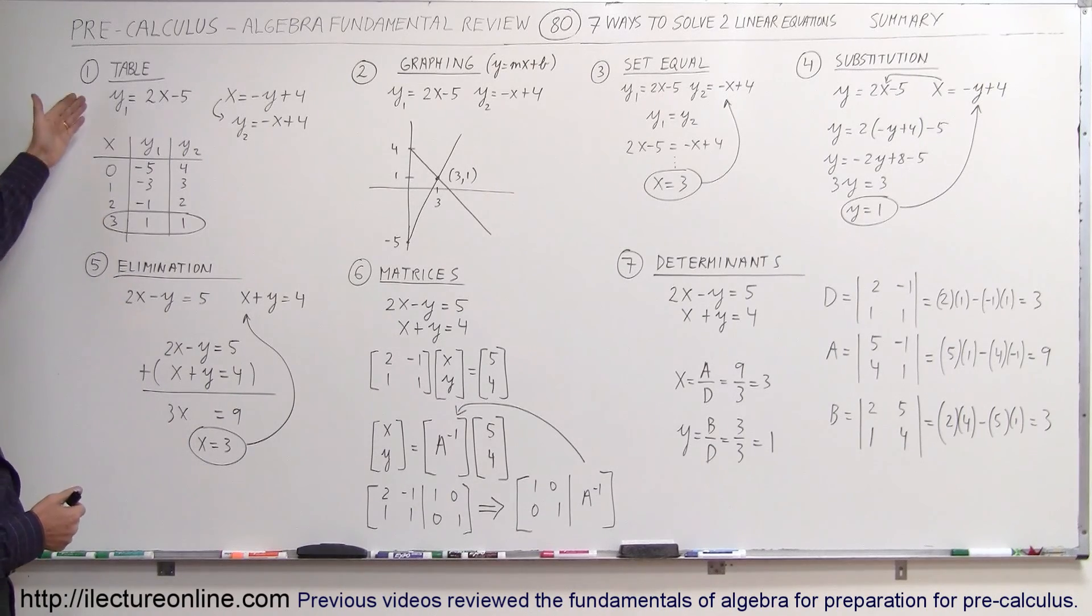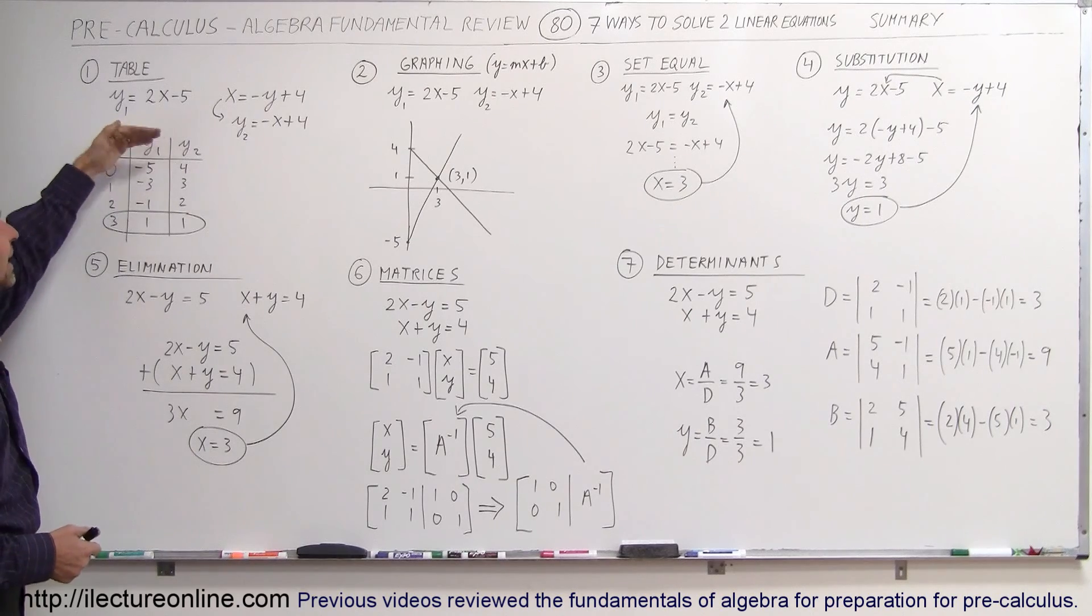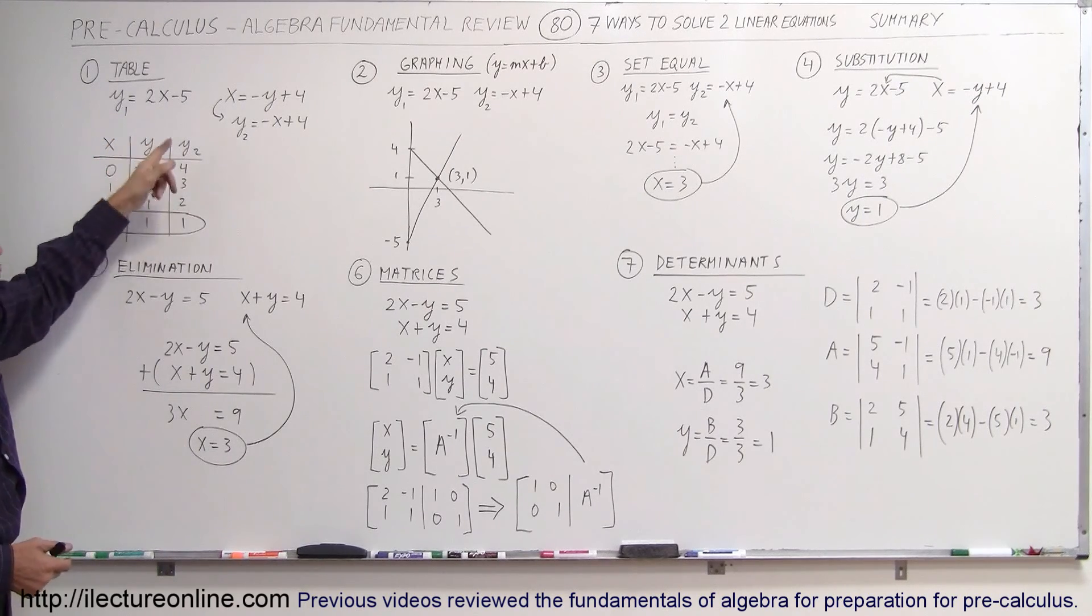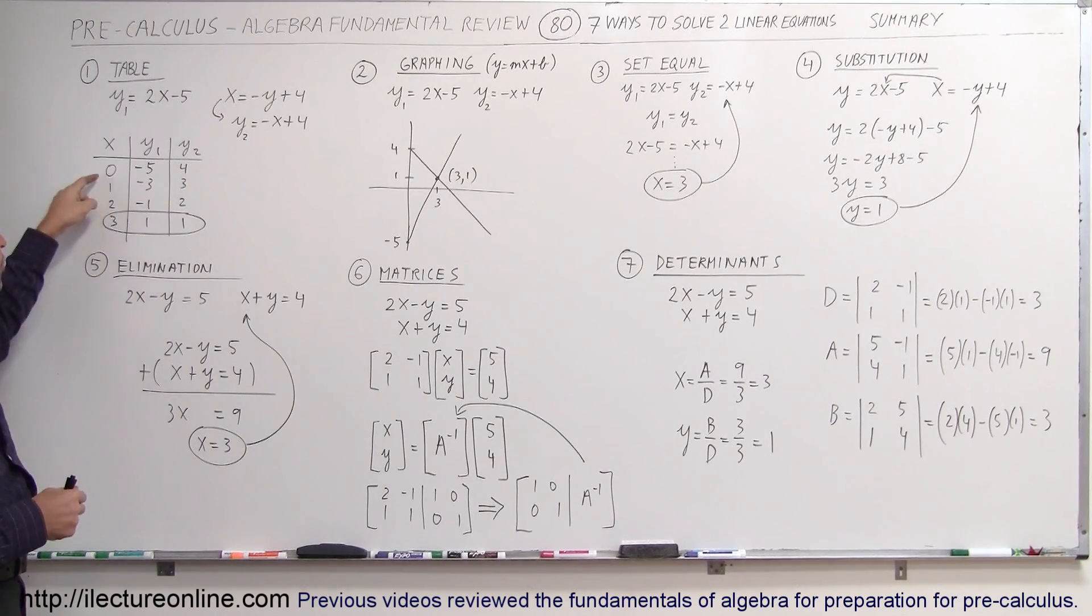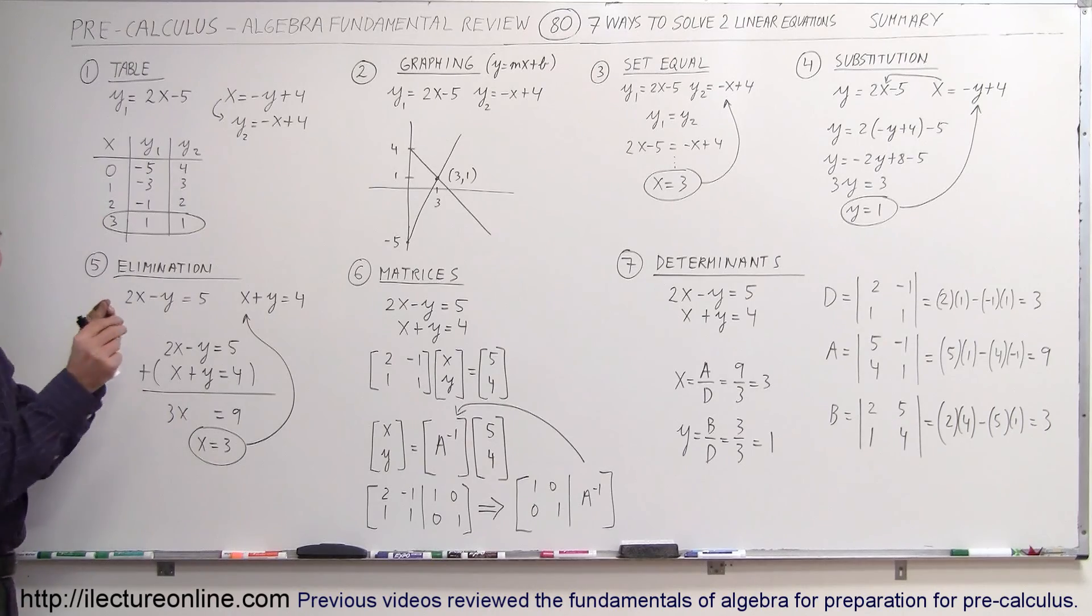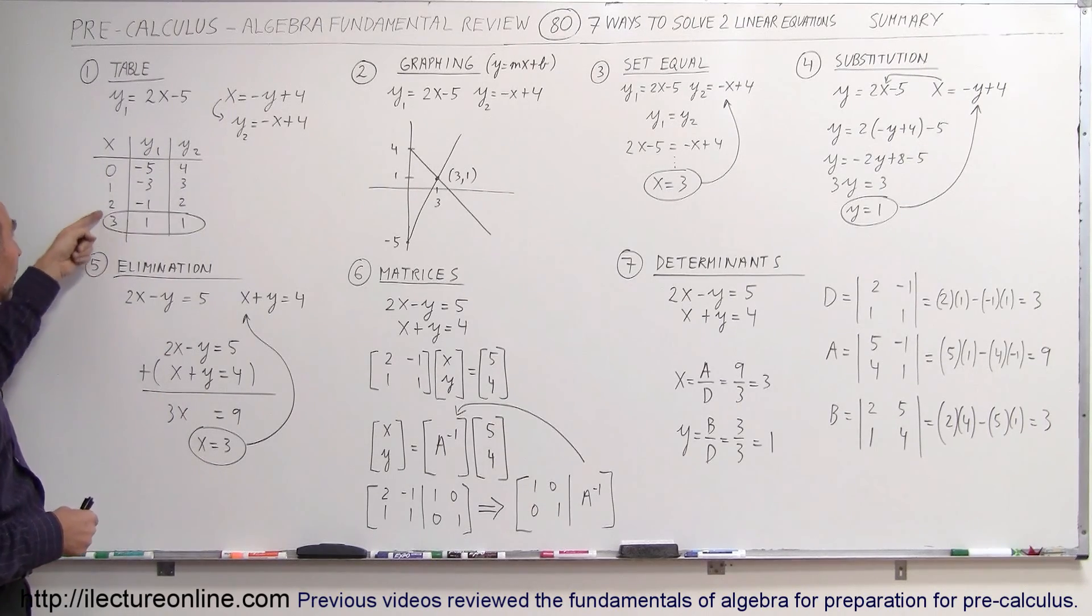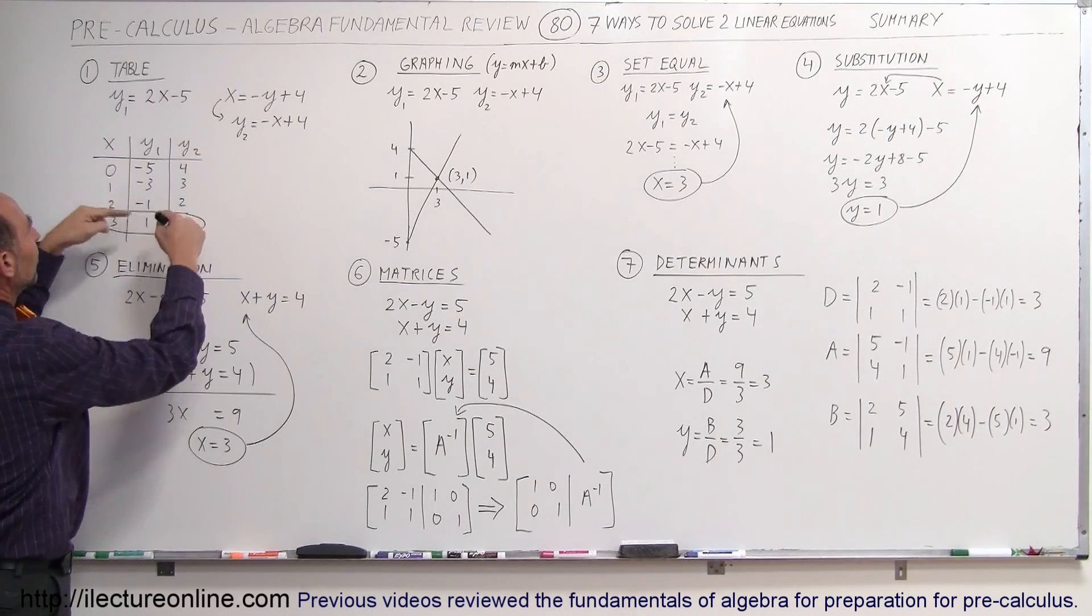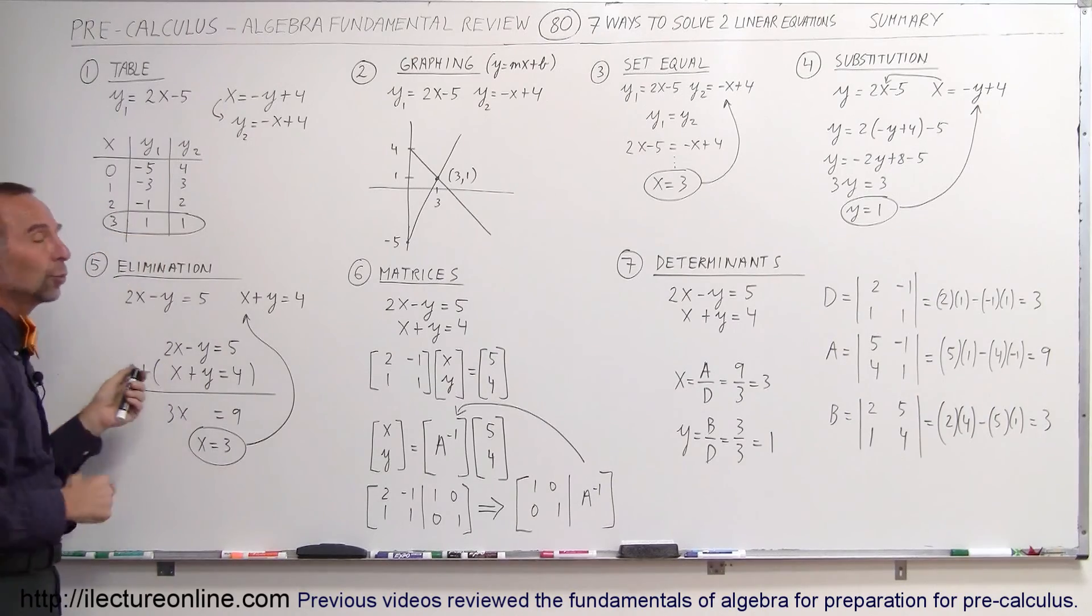The first method is using a table of values. You have two equations. You plug in values for x and get the corresponding values for y for the two equations until the two converge into a single number. Notice that if you started going into a negative direction for x, the two numbers for y would get farther and farther apart, so you go in the wrong direction. If you go in the correct direction, you can see that the two numbers get closer and closer together until they are the same, and then the solution is x equals 3, y equals 1, like in this example.